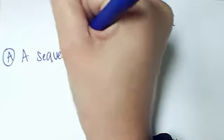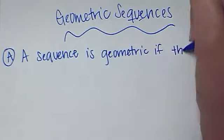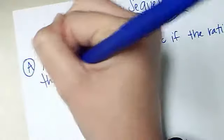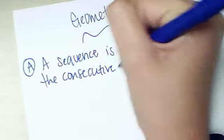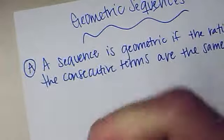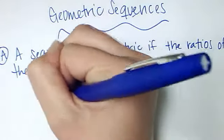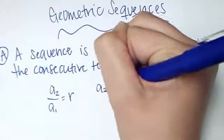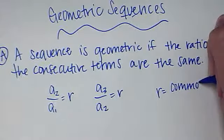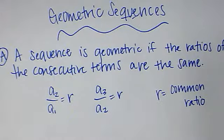A sequence is geometric if the ratios of the consecutive terms are the same. So if I take my terms, let's say A sub 2 over A sub 1, and that equals R, and then I do A sub 3 over A sub 2, and that also equals R, then R is equal to the common ratio. Remember in arithmetic we had D, the common difference, in geometric we have R, the common ratio.